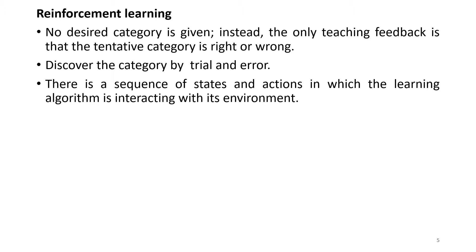Next is reinforcement learning. No desired category is given here. Instead, the only feedback is that the tentative category is right or wrong. The category can be decided by trial and error. There is a sequence of states and actions in which the learning algorithm is interacting with its environment.